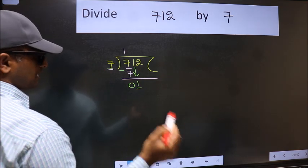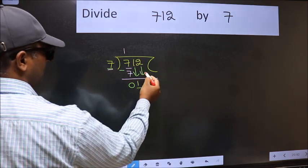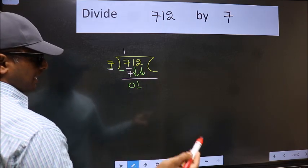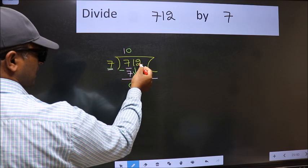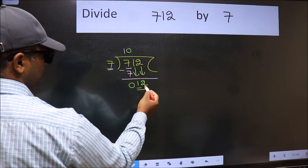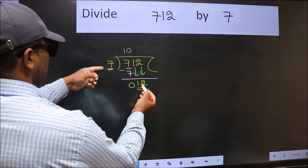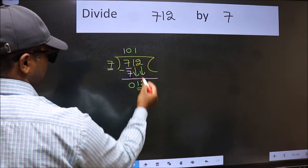So we should bring down the second number. And the rule to bring down the second number is we should put 0 here. Then only we can bring this number down. Now 12. A number close to 12 in the 7 table is 7 once 7.